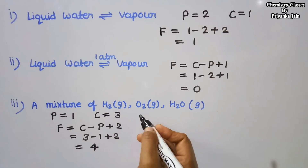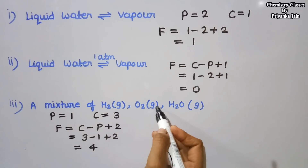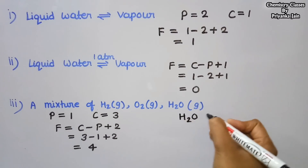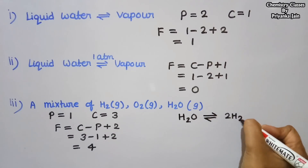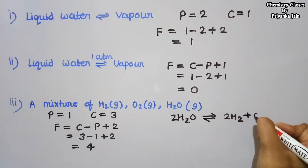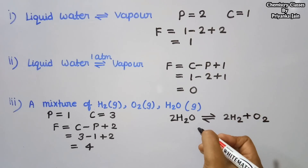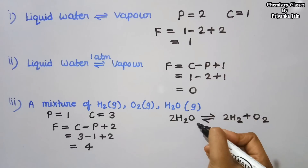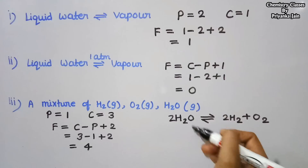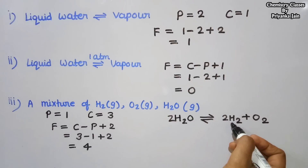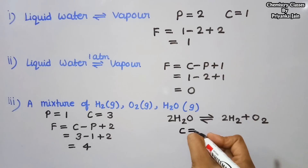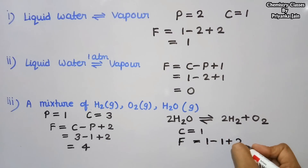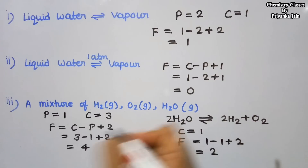There is another condition: when these three gases are formed by the decomposition of water vapors, giving the equilibrium 2H₂O ⇌ 2H₂ + O₂. In this case, if we know the concentration of H₂O, we can find the concentrations of H₂ and O₂ because of the equilibrium and the 2:1 stoichiometric ratio. So we need only one component for these three species. Phase is still one, so F = 1 − 1 + 2 = 2. The degree of freedom is two.